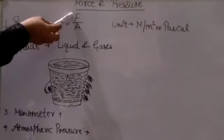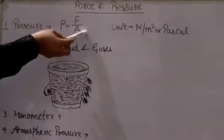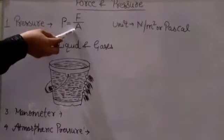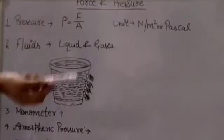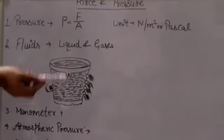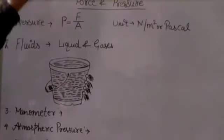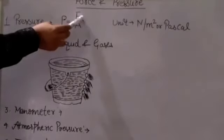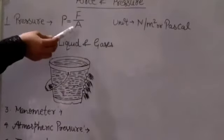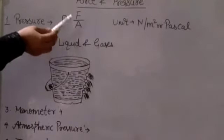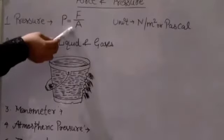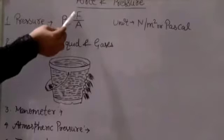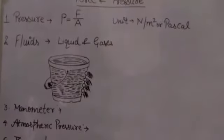What is pressure? The force that is exerted on a unit surface area is known as pressure. If F is the force applied and A is the surface area, then the pressure P is equal to F upon A. So the formula of pressure is P = F/A.